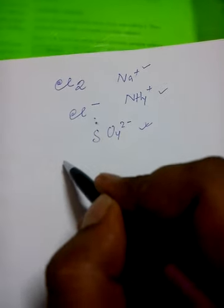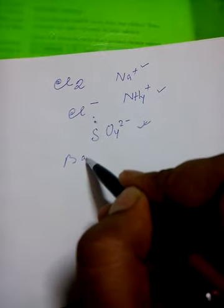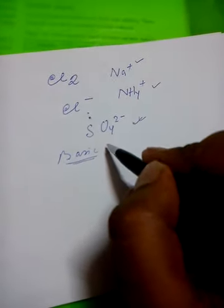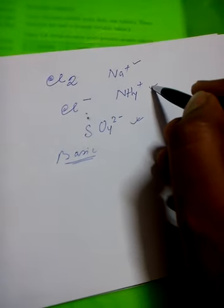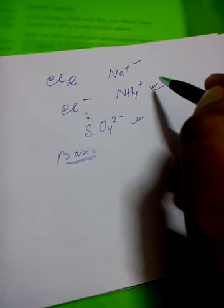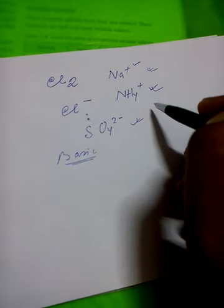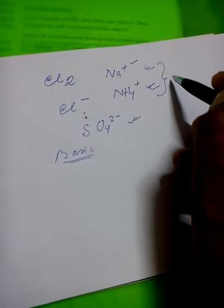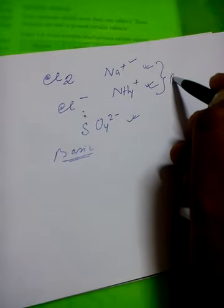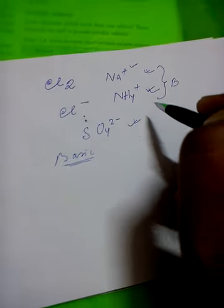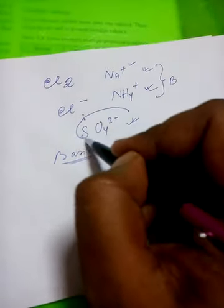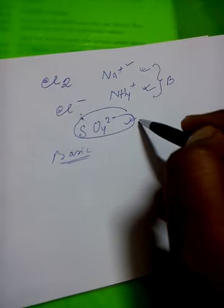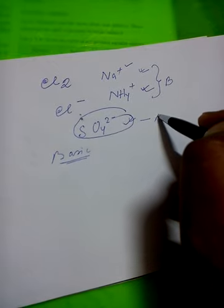There are two types of radicals: one is basic radical. Basic radicals are those which have positive charges on them; they are known as basic radicals. Whereas the radicals which are having negative charges on them, they are known as acidic radical.